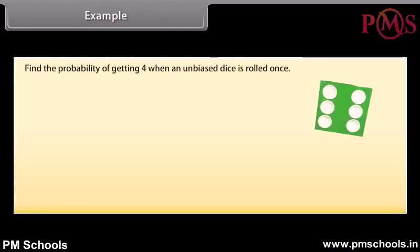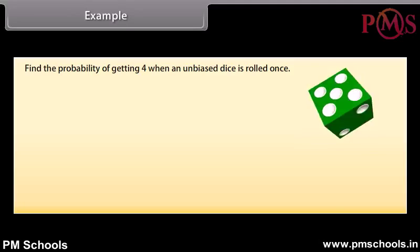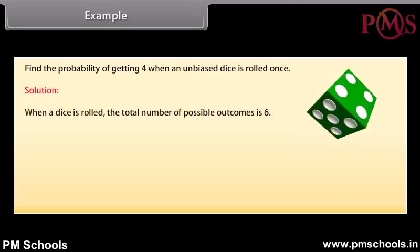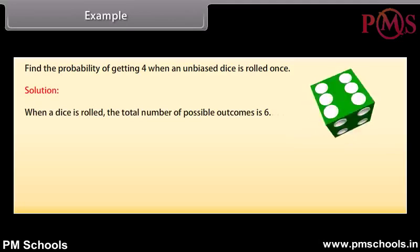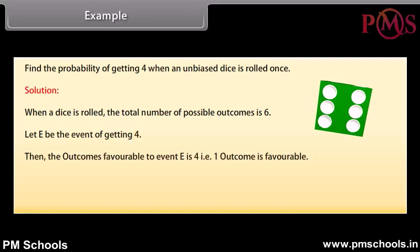Example: Find the probability of getting 4 when an unbiased dice is rolled once. Solution: When a dice is rolled, the total number of possible outcomes is 6. Let E be the event of getting 4. Then the outcomes favorable to event E is 4, that is, one outcome is favorable. Hence, probability of event E is equal to 1 upon 6.